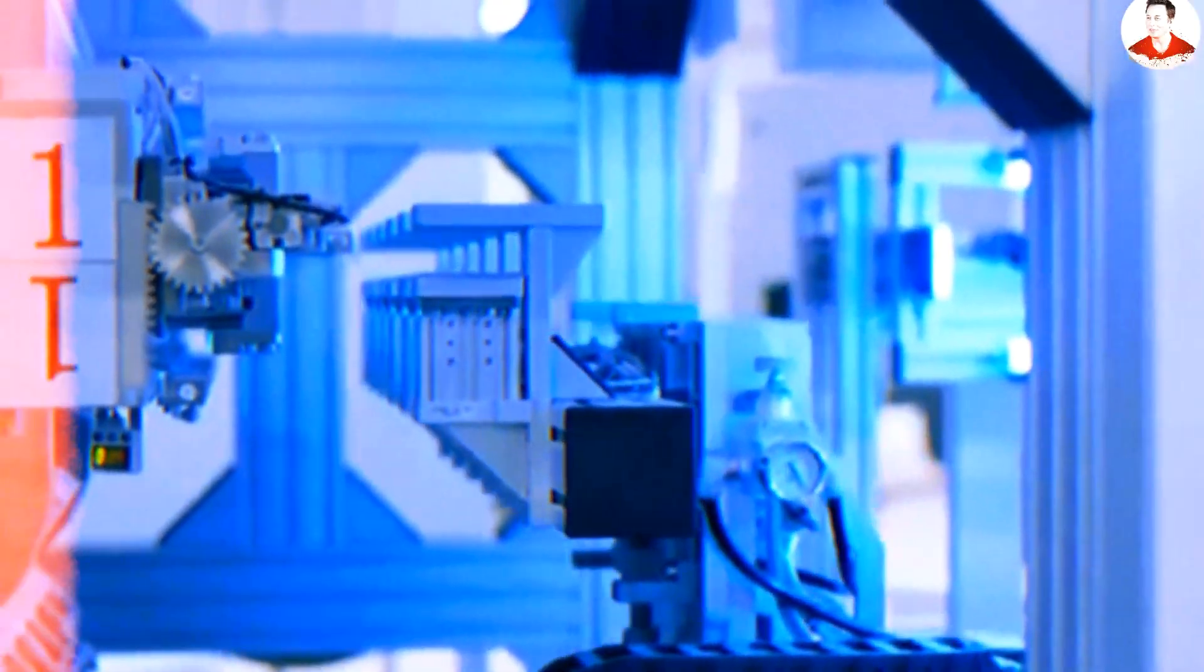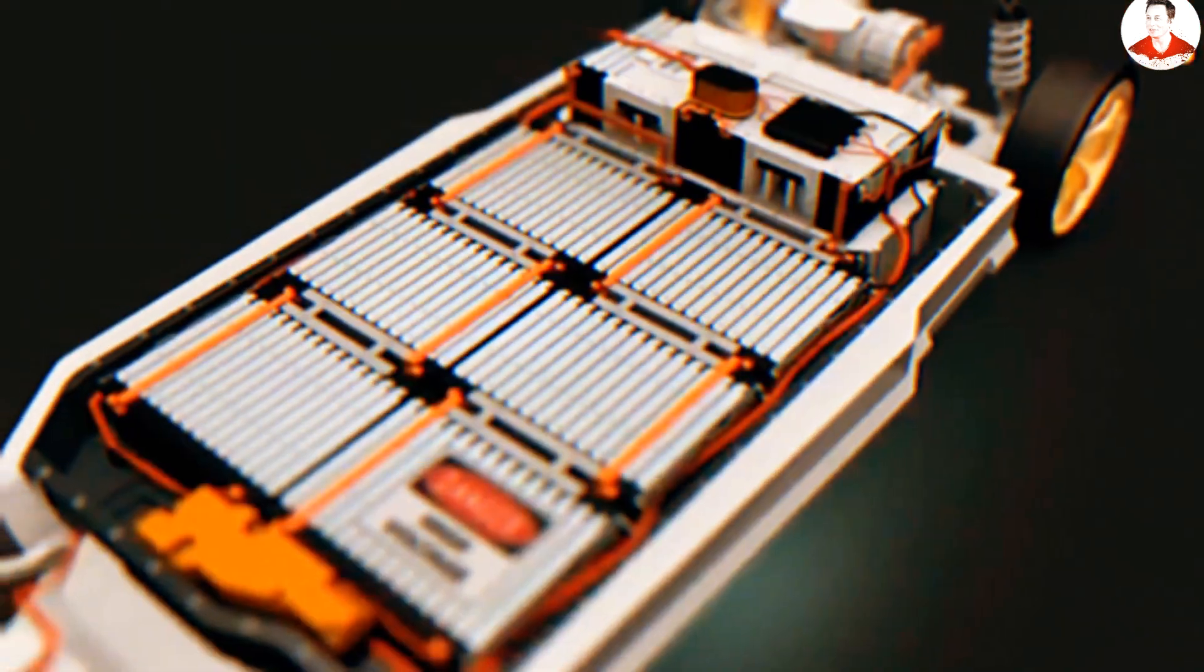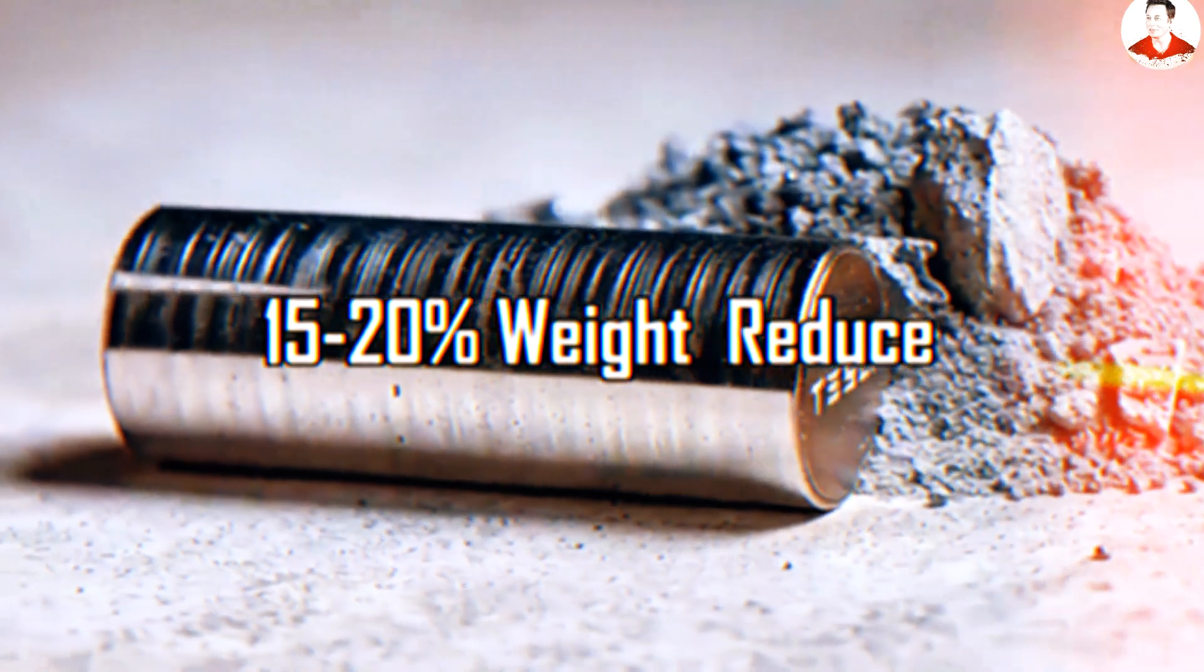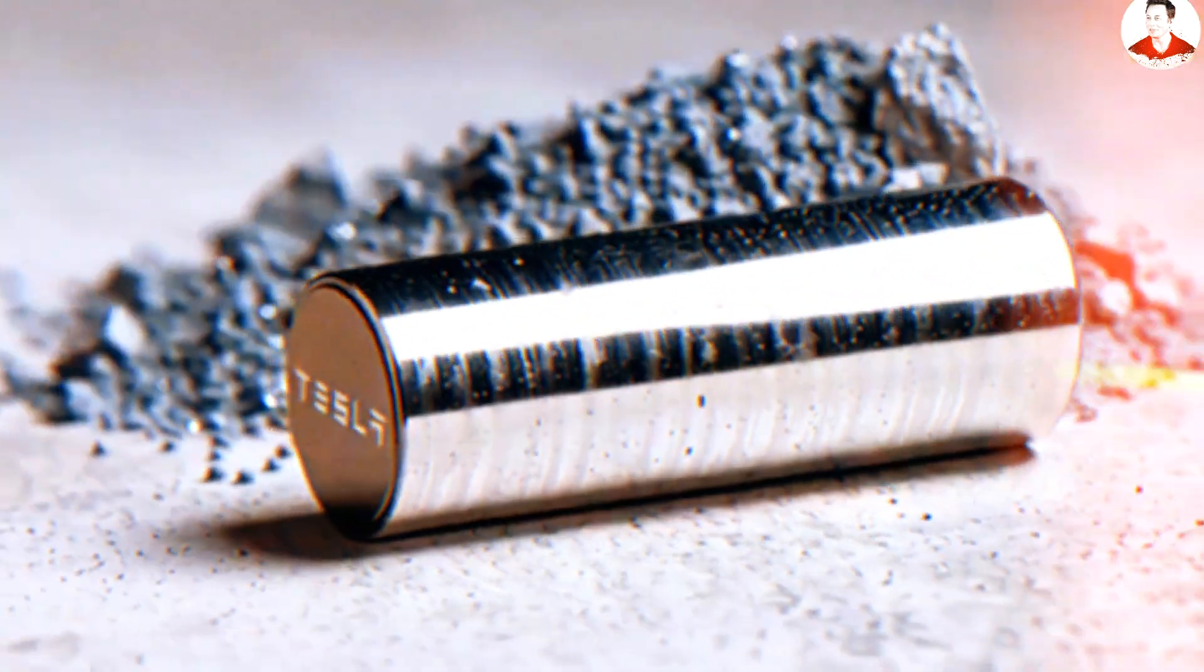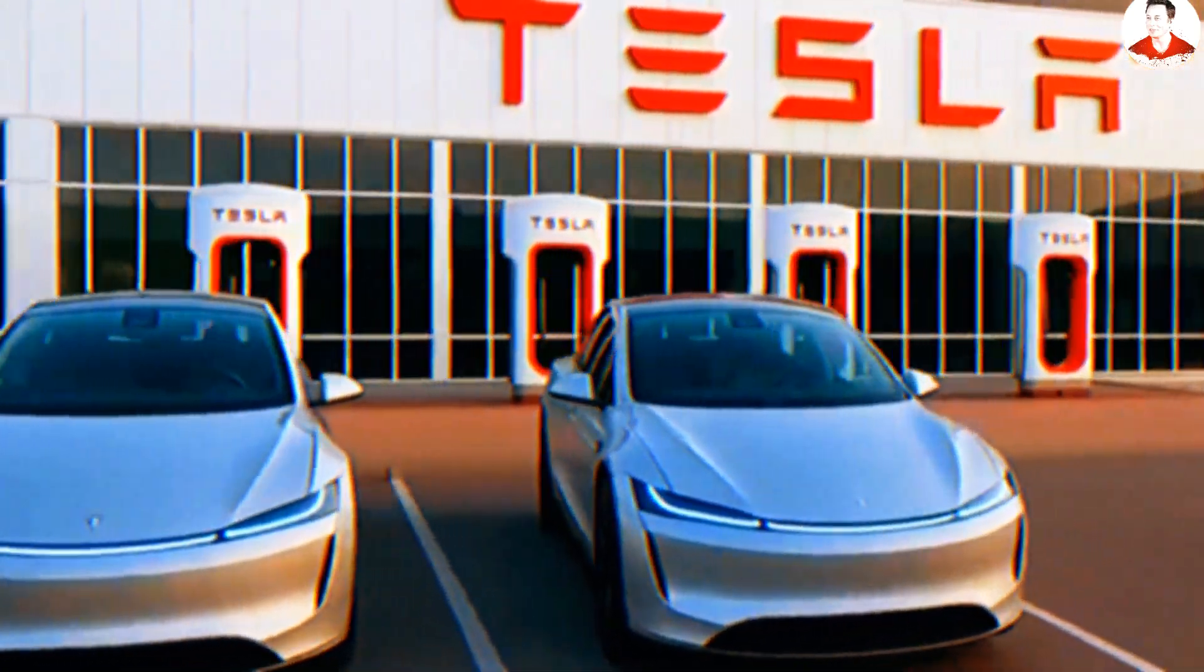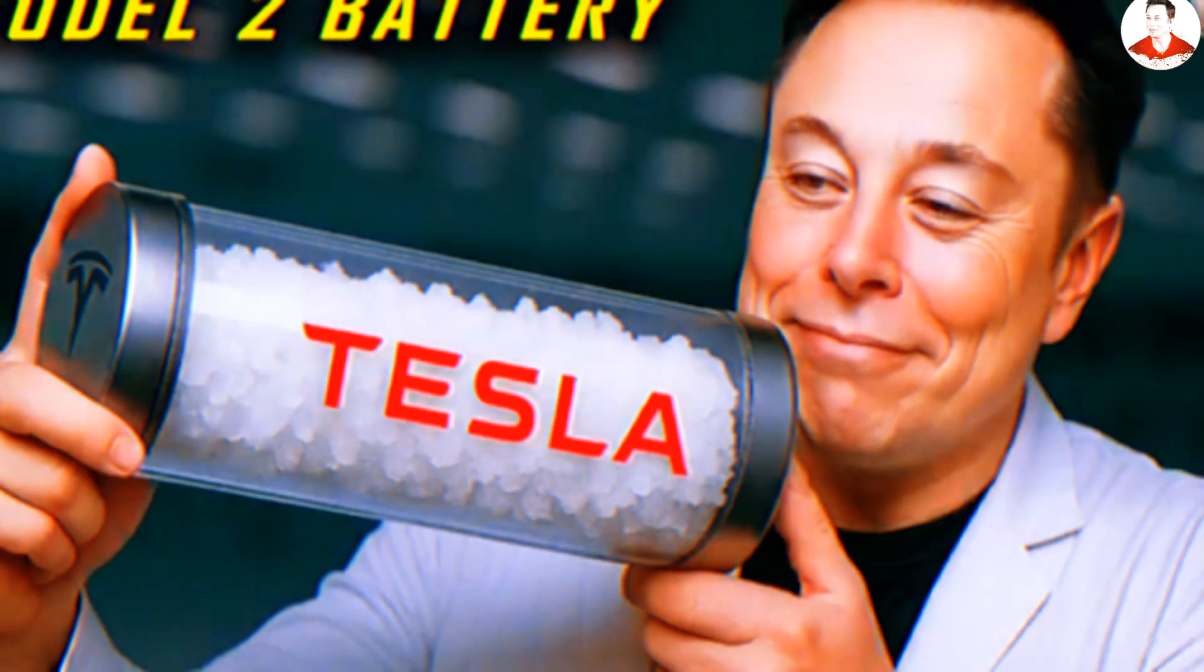The structural design innovations are equally impressive. Three-dimensional printing techniques allow engineers to create battery pack casings that are optimized for both strength and weight reduction. Unlike the steel-heavy designs of traditional battery packs, these new structures can minimize casing weight by 15 to 20 percent while maintaining structural integrity. Every gram matters when you're trying to create an affordable electric vehicle that can compete with gasoline cars. Perhaps most remarkably, the unique properties of aluminum.